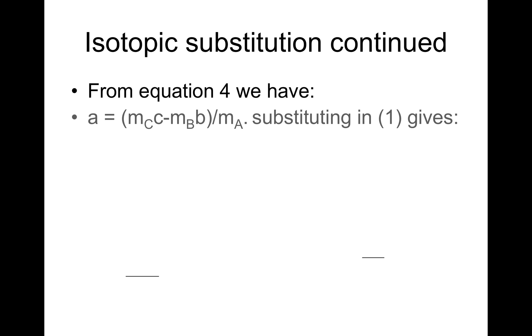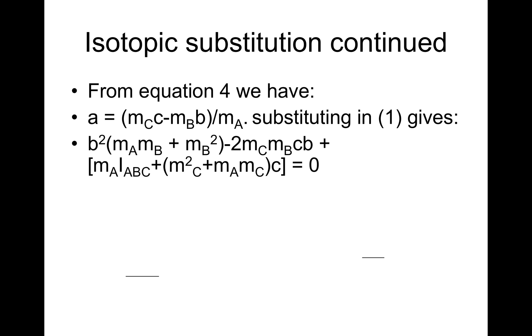From equation 4, we have A is equal to (m_C*c - m_B*b)/m_A. Now, substituting this in equation 1 gives B²*(m_A*m_B + m_B²) minus 2*m_C*m_B*B + (m_A*I_ABC + (m_C² + m_A*m_C)*c) is equal to 0.